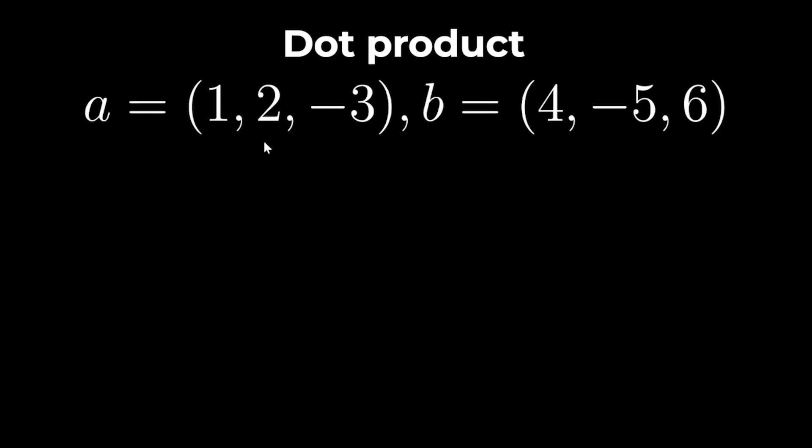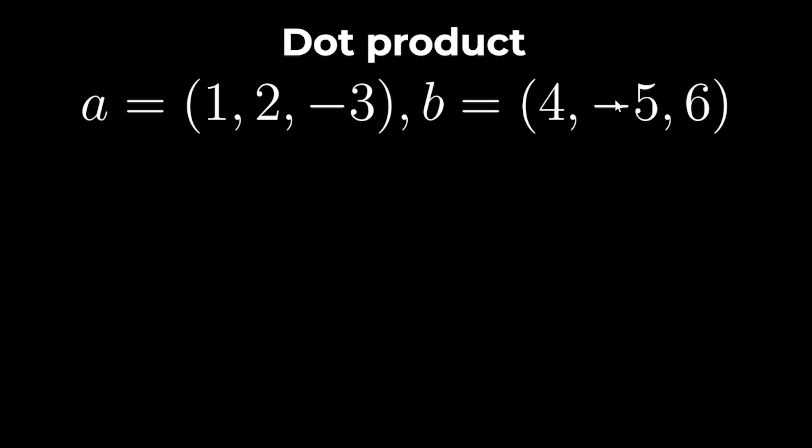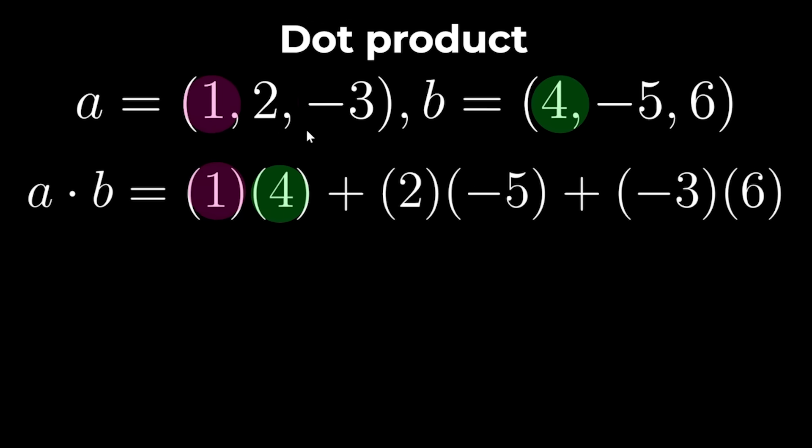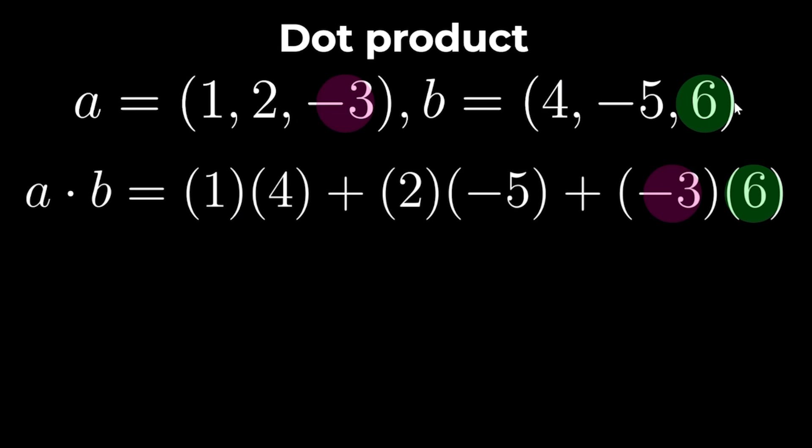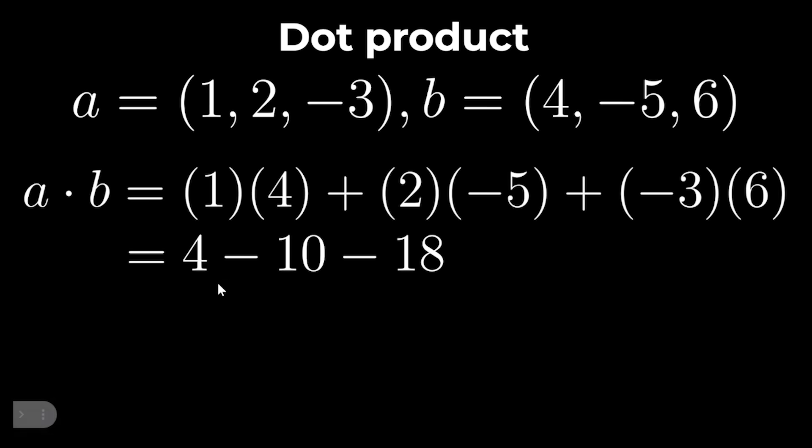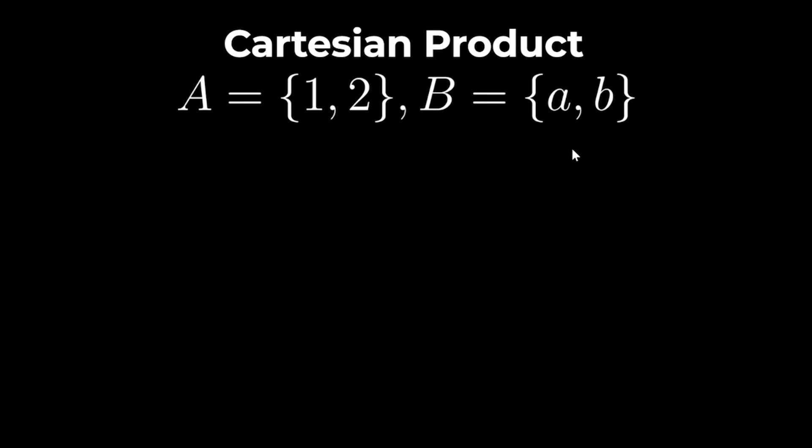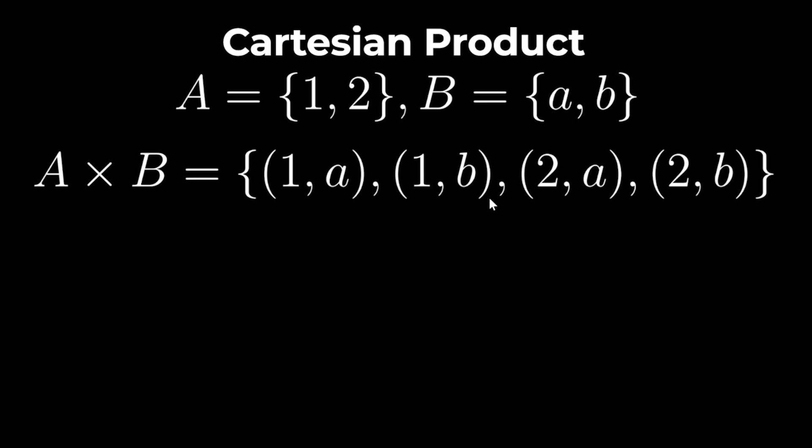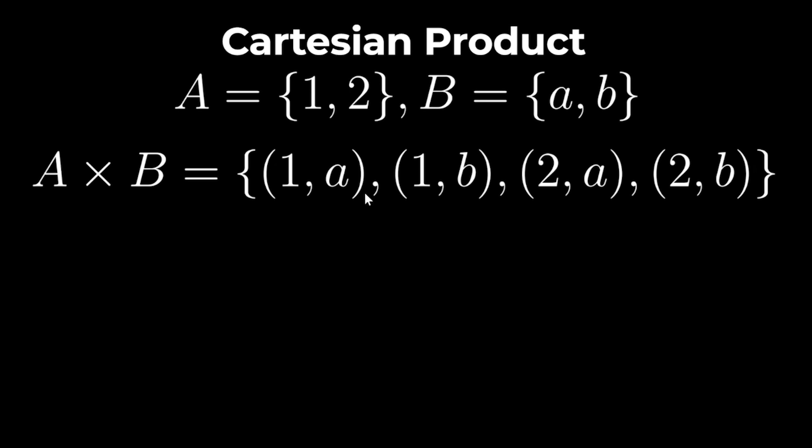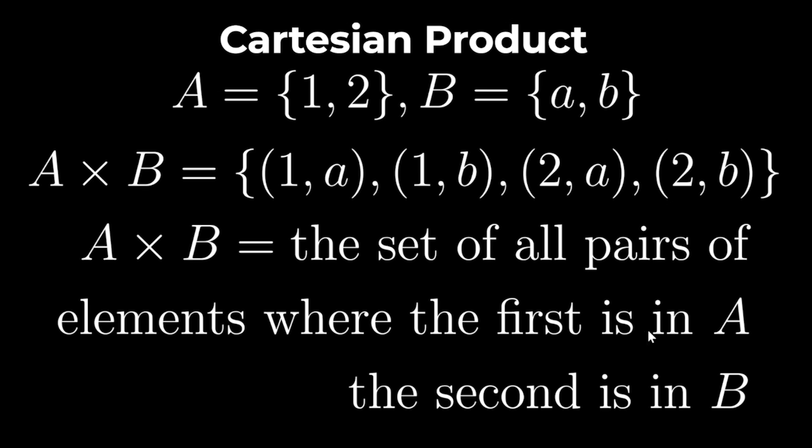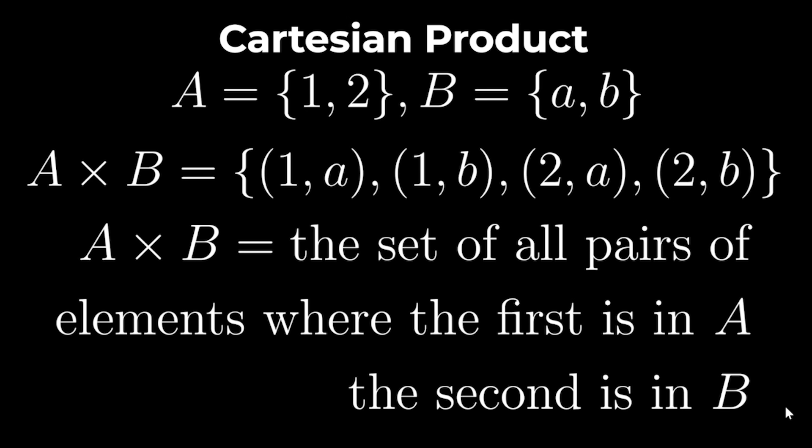The dot product of two vectors A and B where A is 1, 2, minus 3 and B is 4, minus 5, 6 is the sum of the product of the adjacent values. So you just multiply the 1 by the 4 and then the 2 by the minus 5 and the minus 3 by the 6 which gives you 4 minus 10 minus 18 which is minus 24. If A is 1, 2 and B is AB then the Cartesian product is the set of ordered pairs 1A, 1B, 2A, 2B. So the Cartesian product of A and B is the set of all pairs of elements where the first is in A and the second is in B.